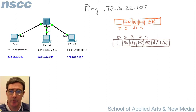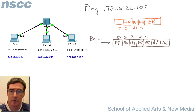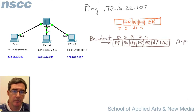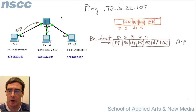For the destination MAC address, PC1 doesn't know which machine has it, so it uses all ones — the broadcast address. This ARP frame is sent onto the network, and all the hub does is electrically send it out all its interfaces. So the ARP frame arrives at PC2, and it also arrives at PC3.